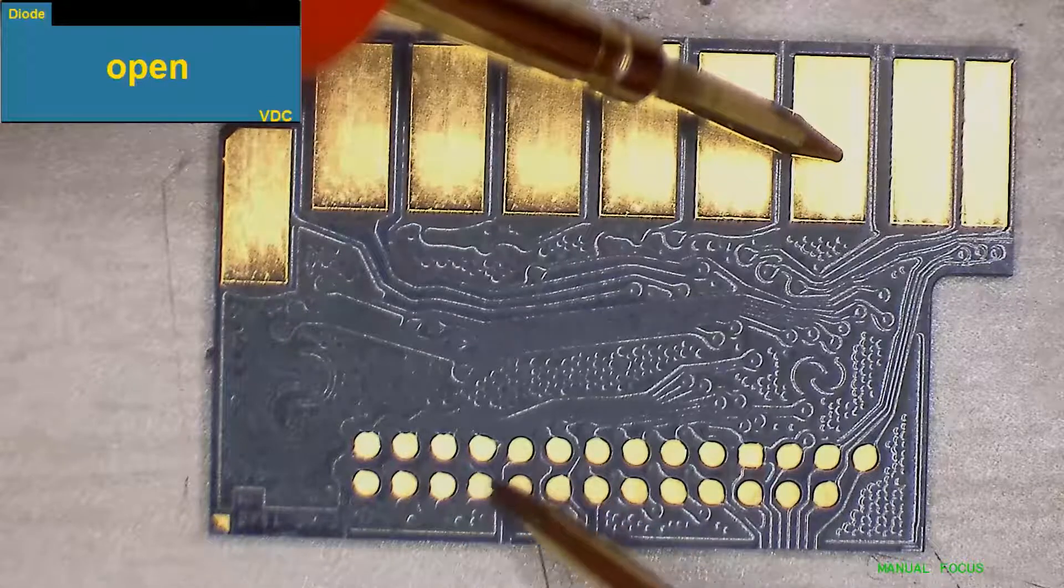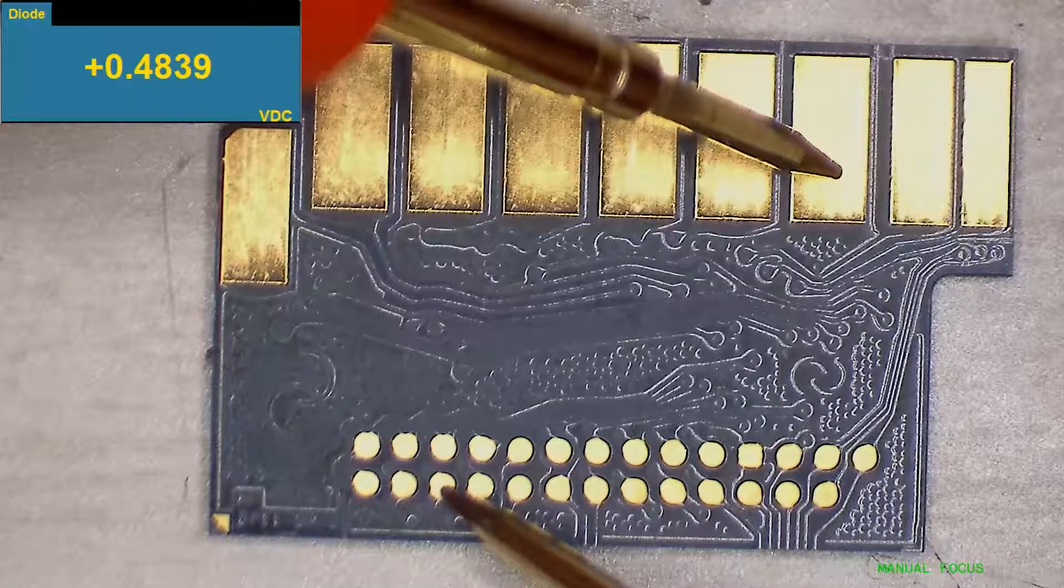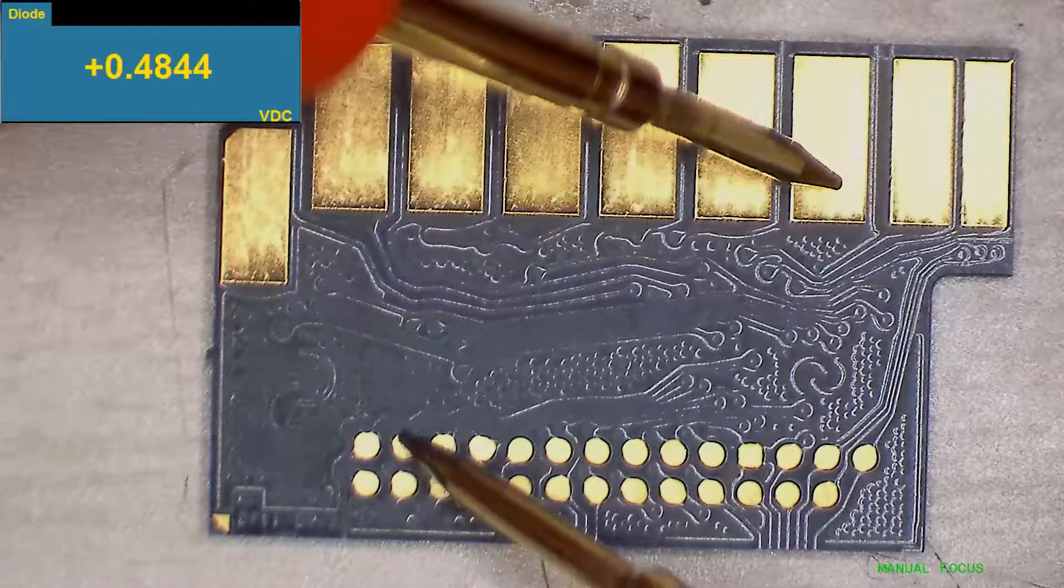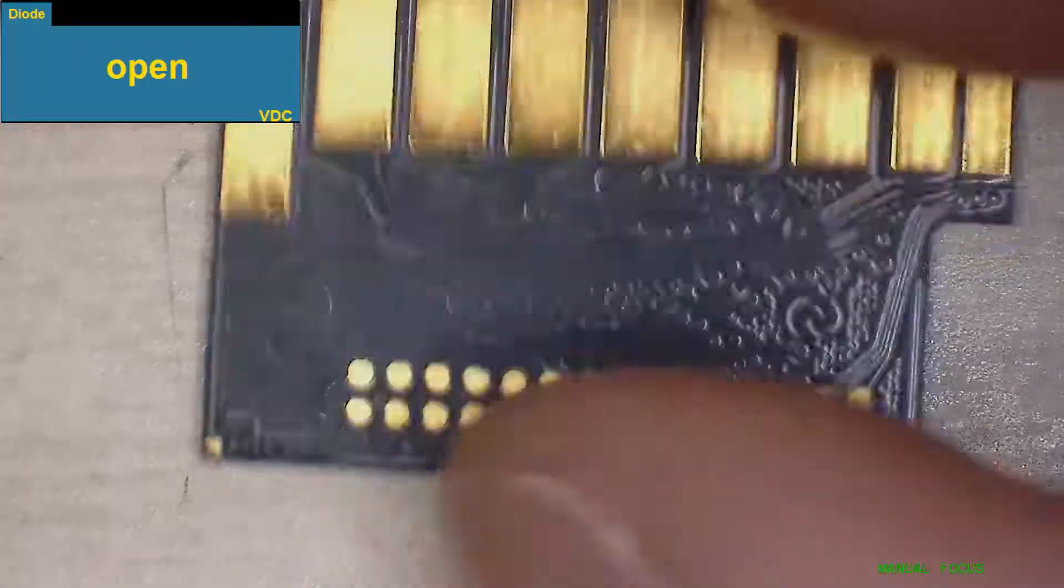Then test the four data pins over here. They should have the same value. This is a known good card, and we get 0.48 on all the contact pins.